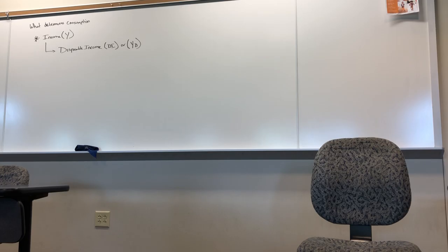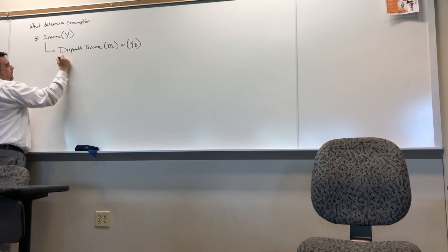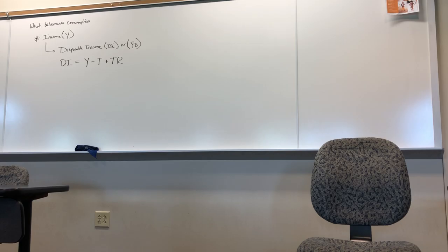Disposable income is the amount of income left over after any taxes have been paid and transfer payments have been received. We've talked about this — we just never put a math equation to it. That's what Chapter 10 does early in the chapter. They define DI as equal to Y minus T plus TR, where Y is income, T is taxes, and TR are transfer payments received.